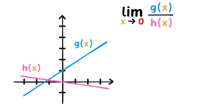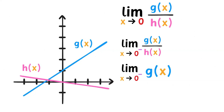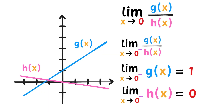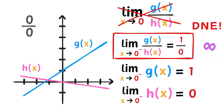Here's another example. Does this limit exist? Well, let's check. As g of x approaches 1 from the left, we see that it approaches 1. But the limit of h of x from the left is 0. 1 over 0 is undefined. So that means either this limit doesn't exist or it's unbounded and approaches infinity. Now, when substituting, if we got something like 0 over 0, then that could also mean that the limit still exists. We'll touch on this later in the video.